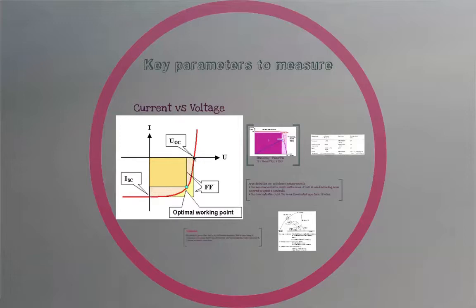There are three important points to keep in mind. First, what happens at open circuit — when current is zero. No current is flowing and we can still measure voltage across the terminals of the pn junction; we call that the open circuit voltage, Voc. On the other extreme, we have the short circuit current — where voltage is zero, the terminals are short-circuited, and you get the maximum current Isc. In between we have the optimal working point, labeled by the fill factor FF.